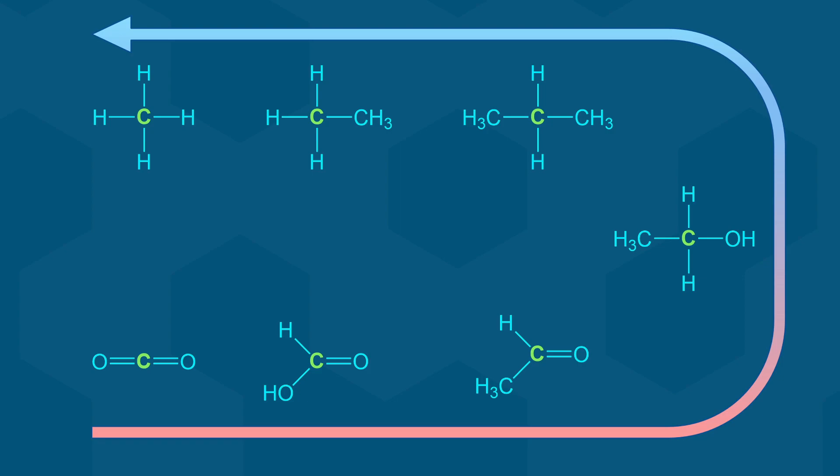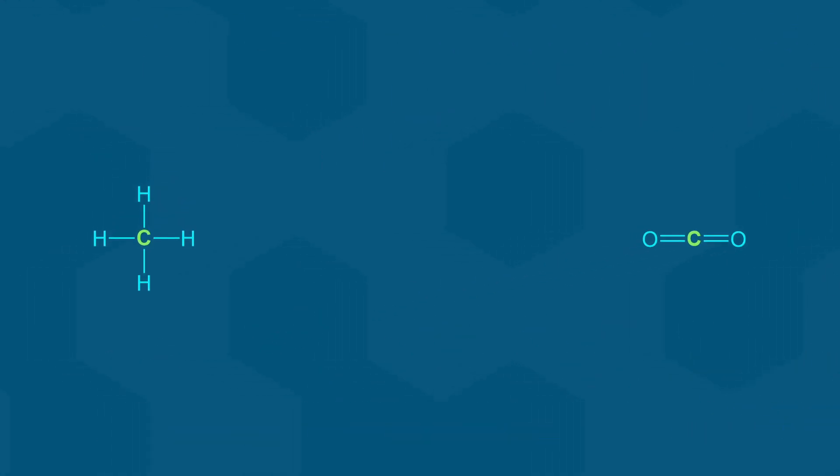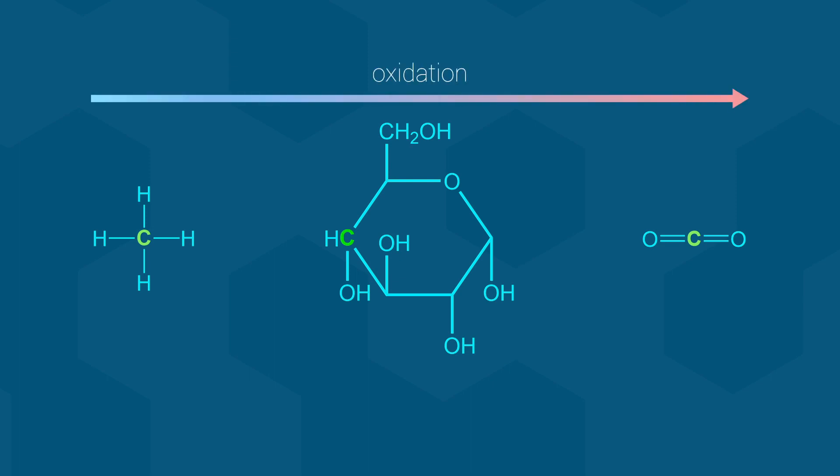With this in mind, we can look again at the methane and carbon dioxide and compare them to glucose. Notice that the glucose carbons are neither fully oxidized nor reduced. Moving towards carbon dioxide is oxidation, and moving more towards methane would be reduction. We will talk about how these trends apply to living cells in detail during Biology 112 lectures.